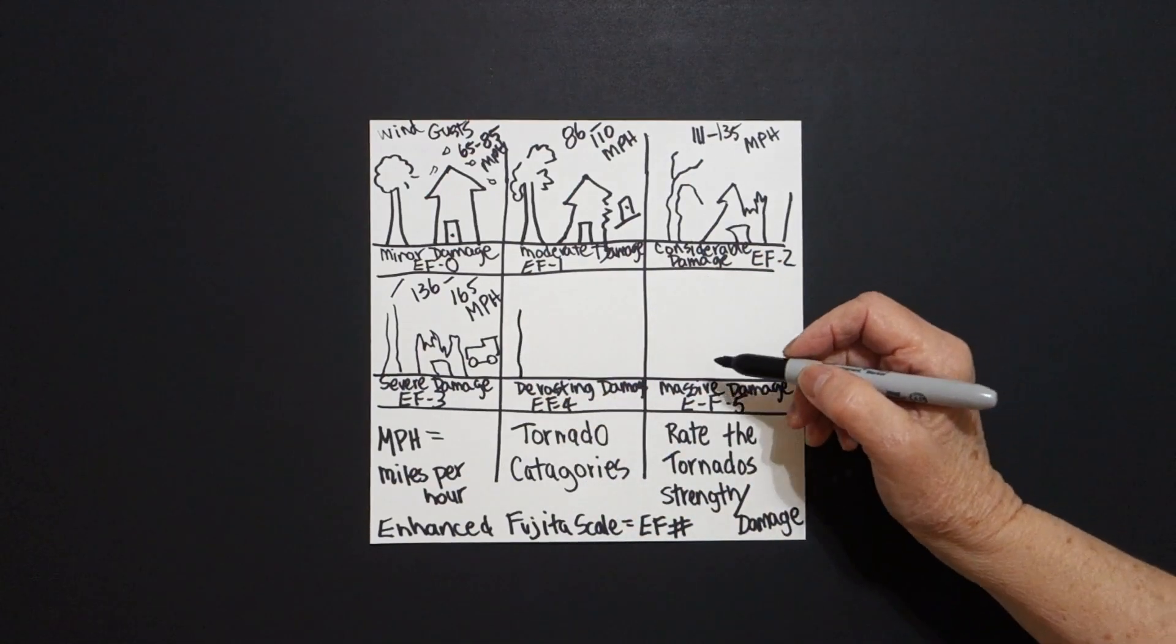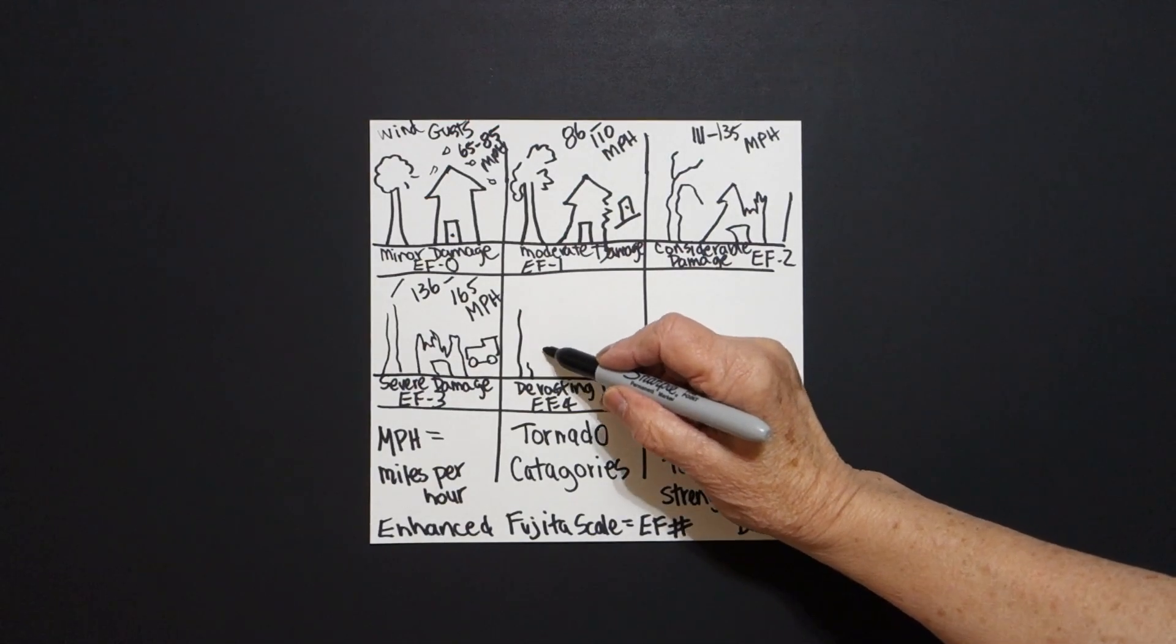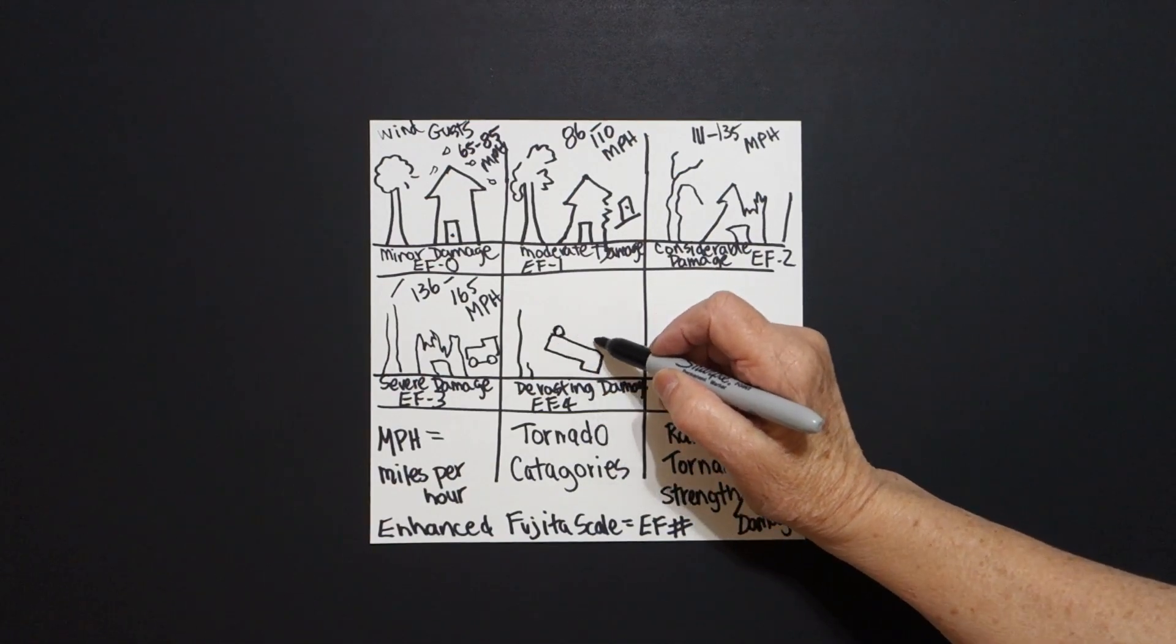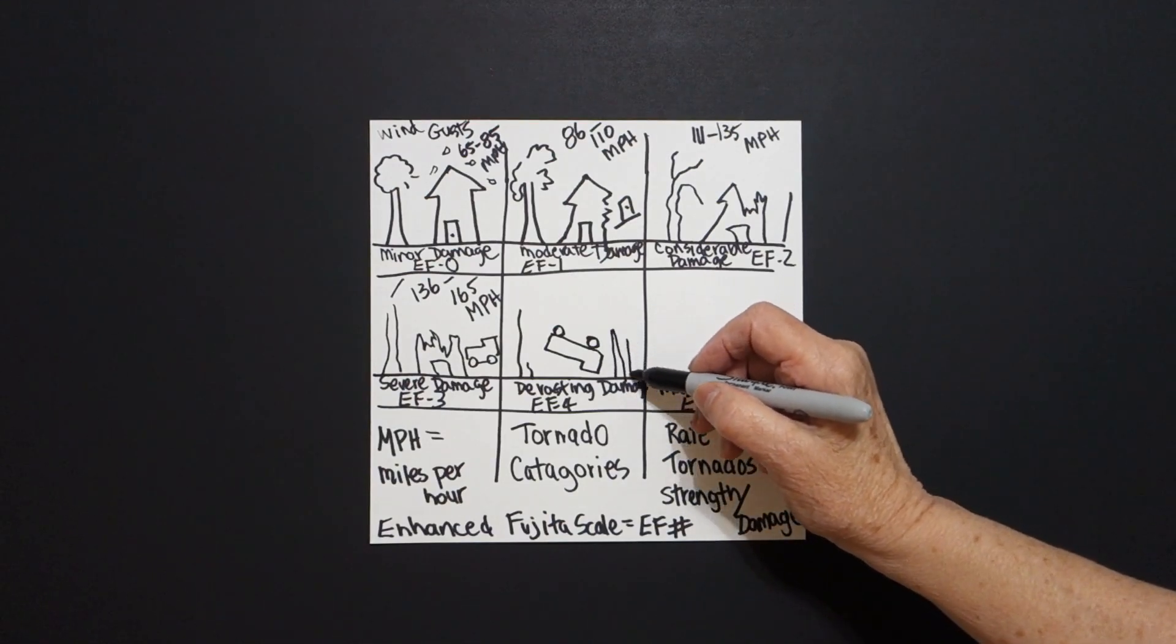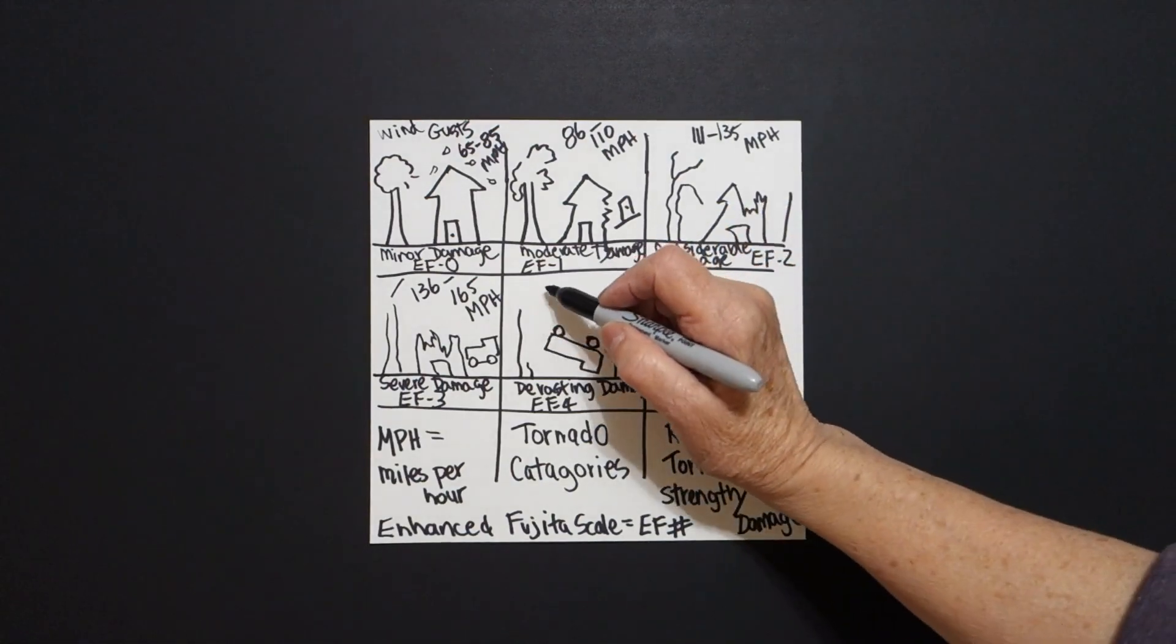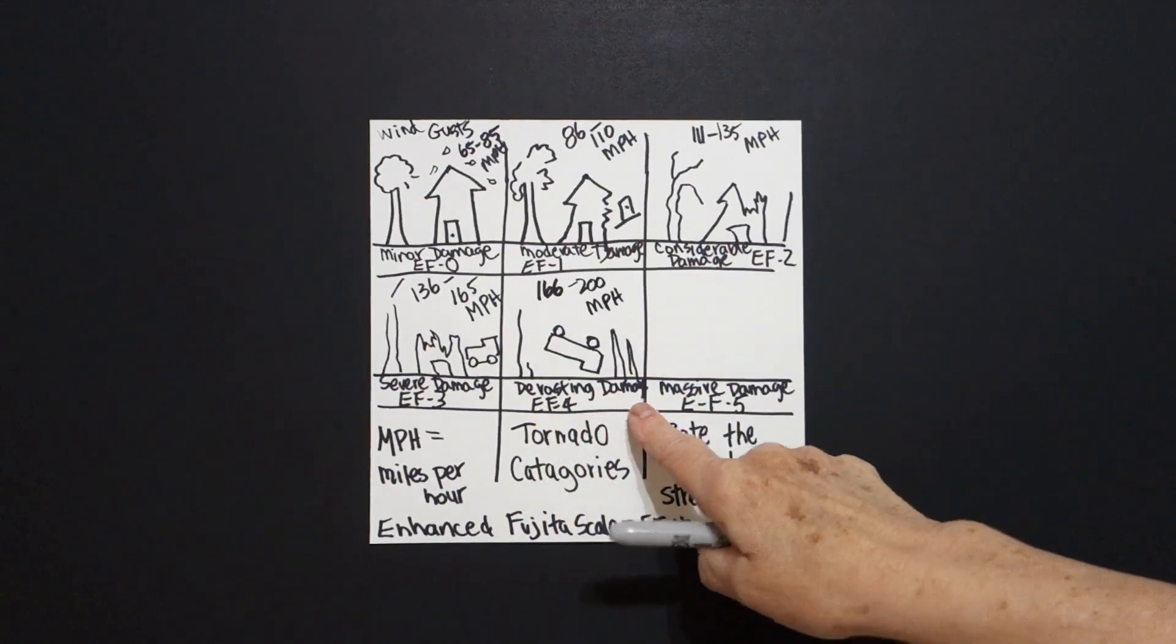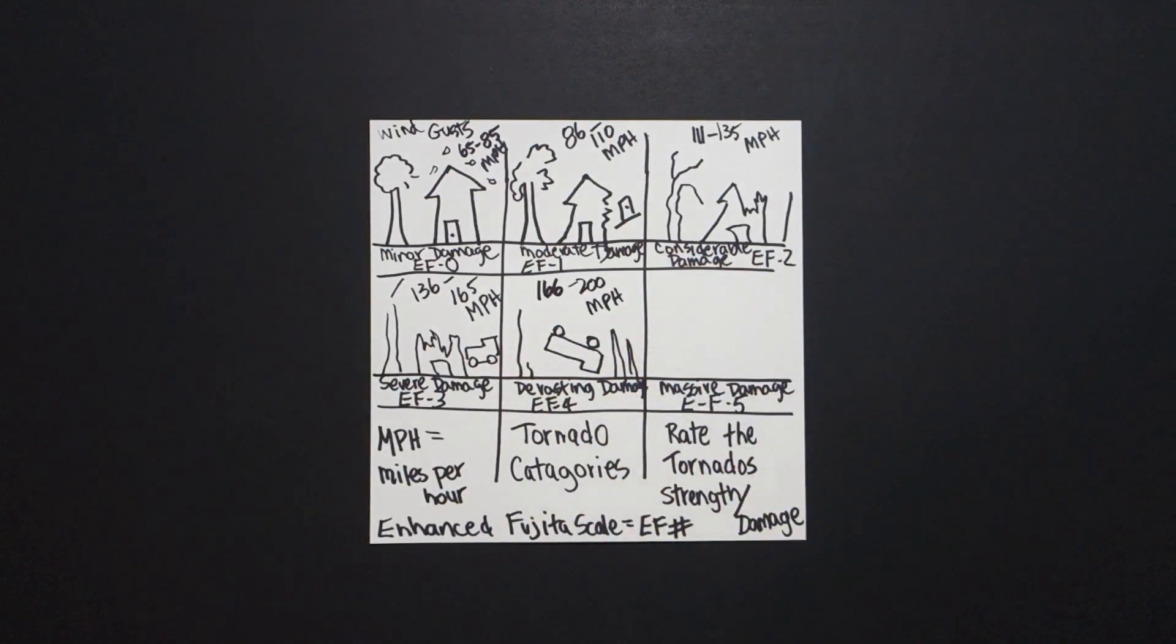Wavy line down. Little bitty wavy line. Straight diagonal, straight line, straight diagonal, straight line, straight line, straight line. Baby circle, baby circle. Straight, straight lines connect. Connect 166 to 200 MPH. Devastating damage. No trees, no buildings, flipped over cars.